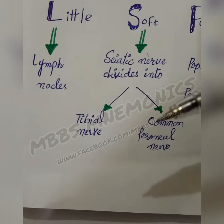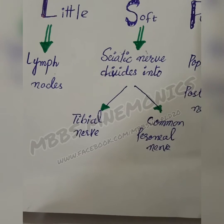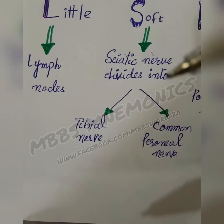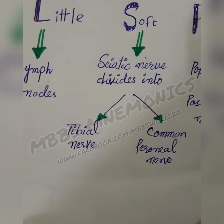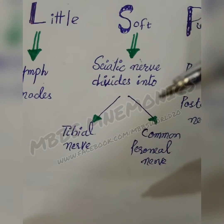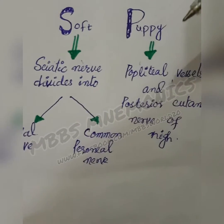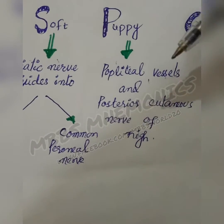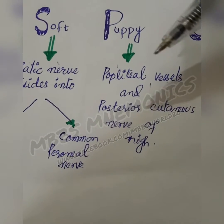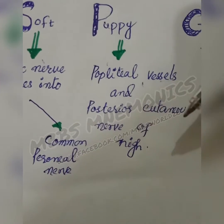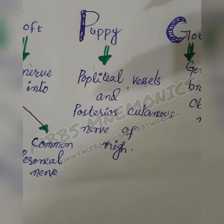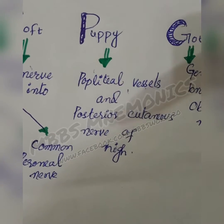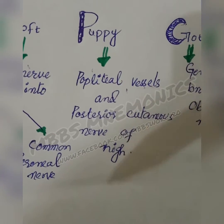S is for the sciatic nerve. The sciatic nerve divides into its two main branches — the tibial nerve and the common peroneal nerve — within the popliteal fossa. P is for popliteal vessels and the posterior cutaneous nerve of the thigh.